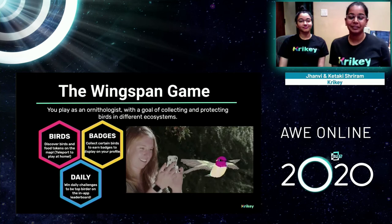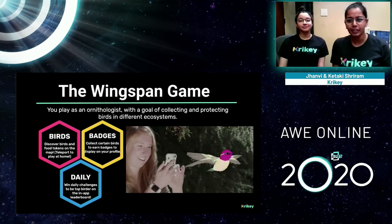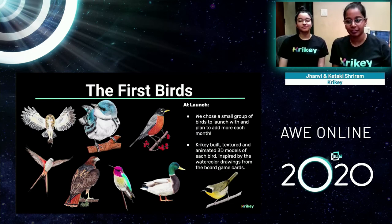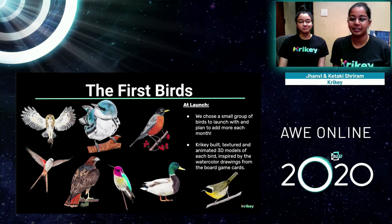You can collect different birds on different days for specific badges to display on your profile, and we have daily challenges where you can compete to be top birder in our in-app leaderboard. The first birds we launched with — we add more every month — are the Eastern Screech Owl, the Cerulean Warbler, American Robin, the Scissor-tailed Flycatcher, which features on the cover of the board game box, the Red-tailed Hawk, Anna's Hummingbird, Mallard Duck, and the Common Yellowthroat.